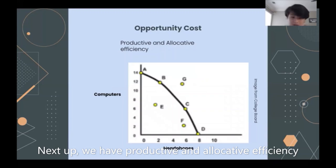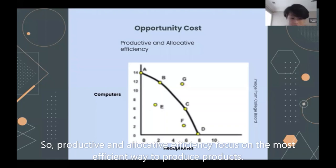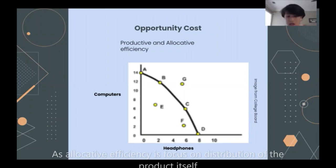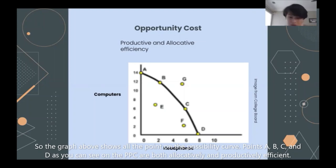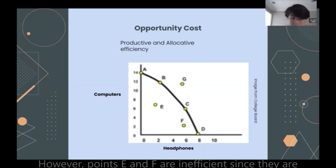Next up, we have productive and allocated efficiency. Productive efficiency is focused on the most efficient way to produce the product, whereas allocated efficiency is focused on distribution of the product itself. The graph shows all the points on the possibility curve, points A, B, C and D, as you can see on the production possibility curve are both allocated and productively efficient.